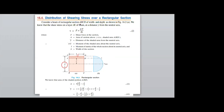Consider a cross-sectional line EF. Above the EF line, we need to hatch the cross-sectional area from the top. The EF line is at a distance of Y. Therefore, we need to find out the area of this shaded cross-section, capital A.